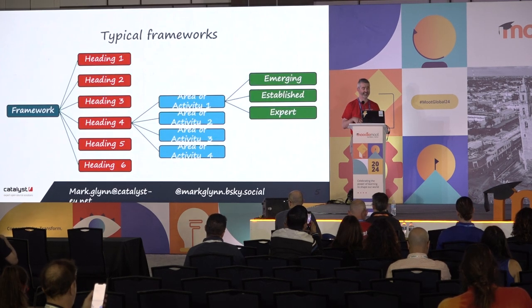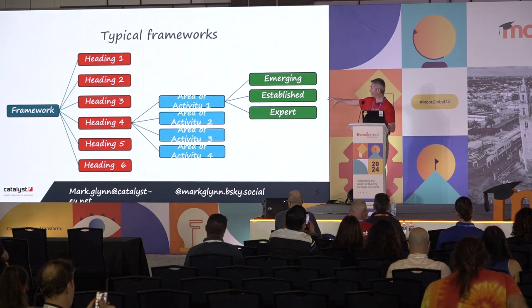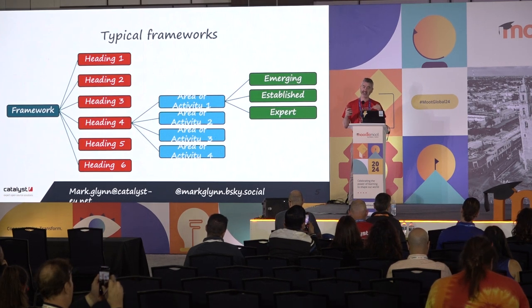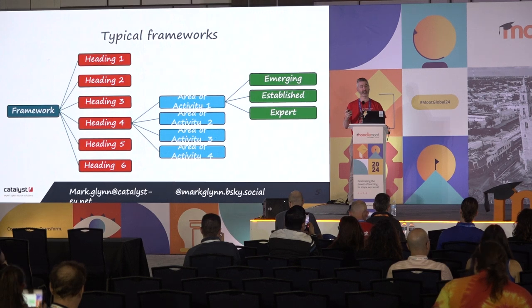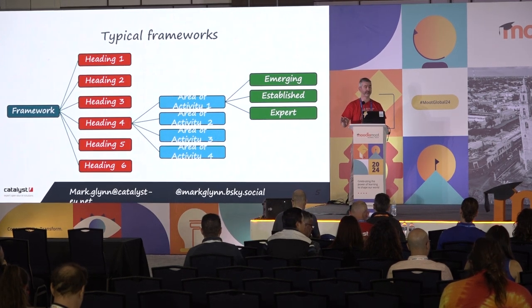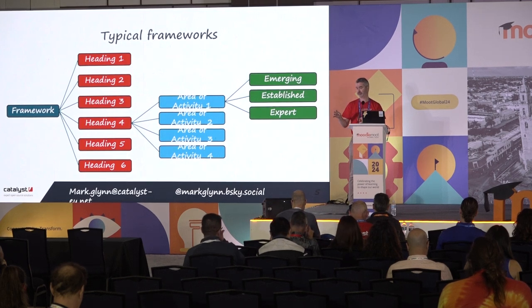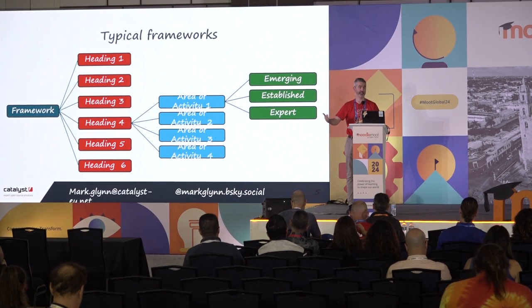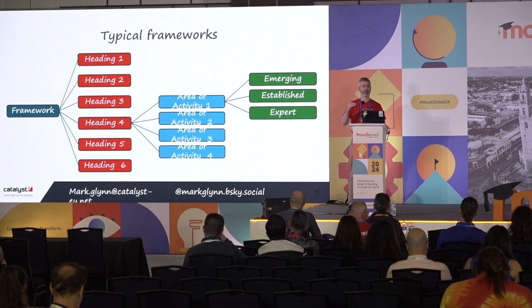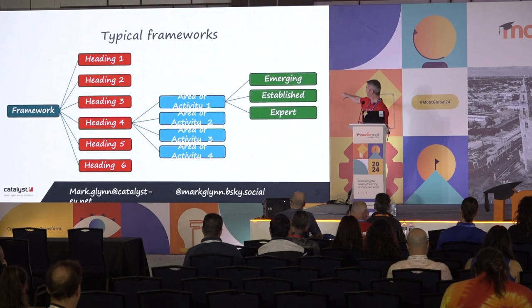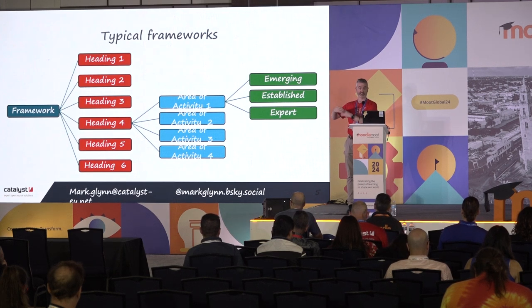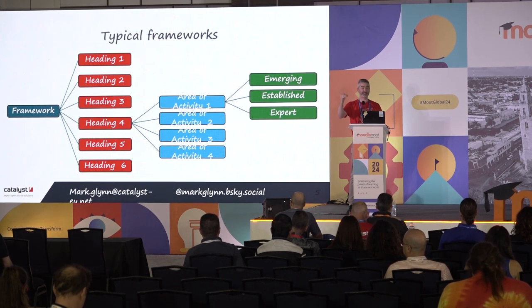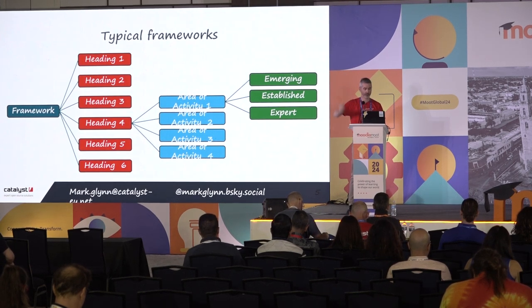So what does a typical framework actually look like? It will have a number of headings, and then under each heading it will give you some areas of activity and areas to focus in. Then it will ask you a question — typically a list of statements where you choose the one that closest relates to you, tick the box, and move on to the next question. At the end, it gives you a score or evaluation. In the example of this framework, you're either emerging, established, or mature — or if you want to use a medal analogy, you're bronze, silver, or gold.